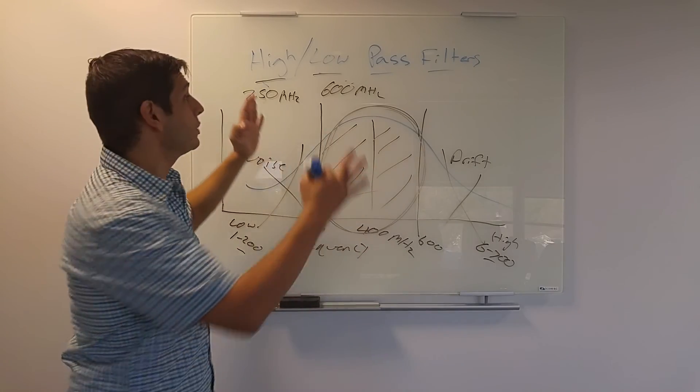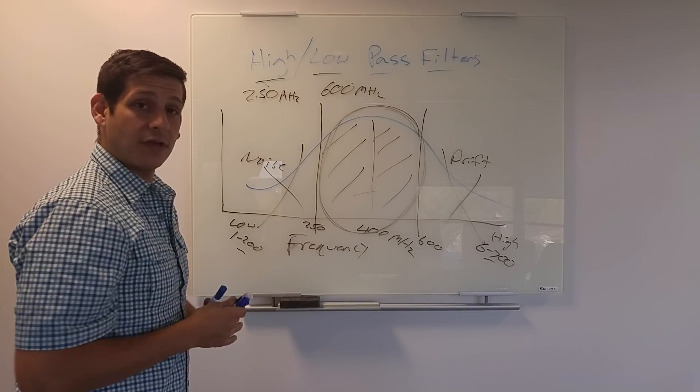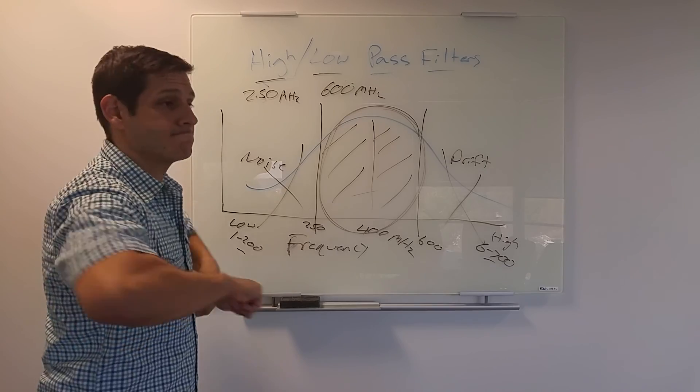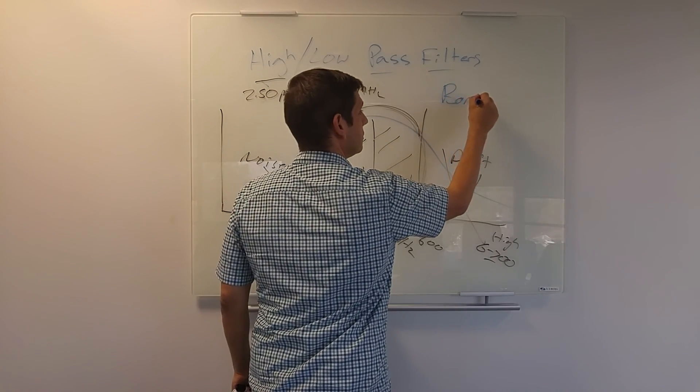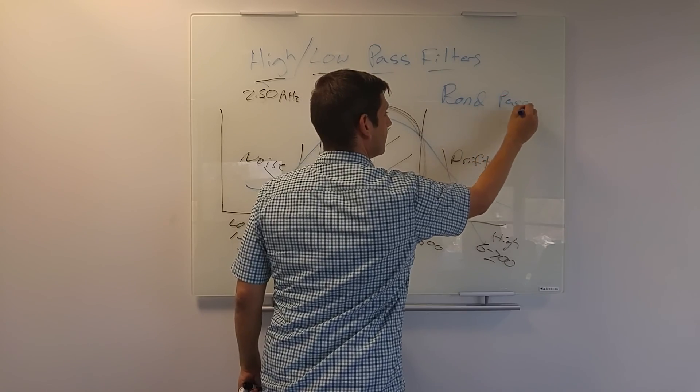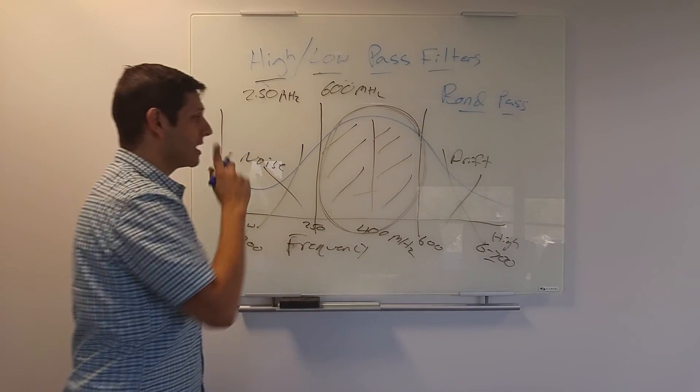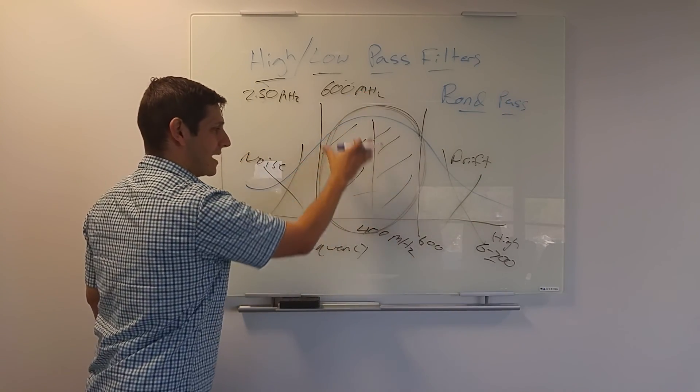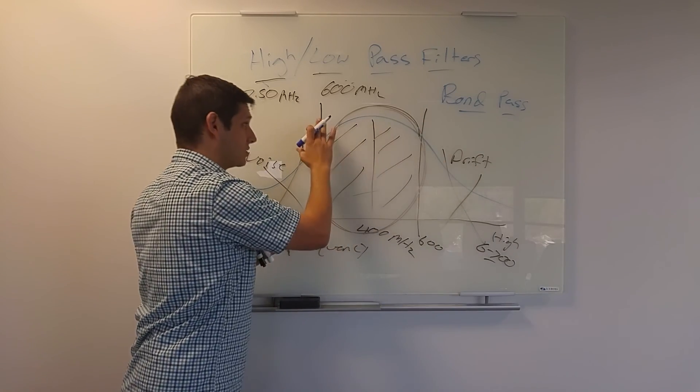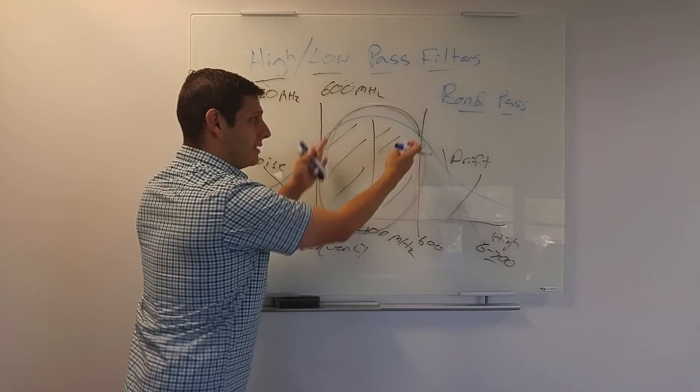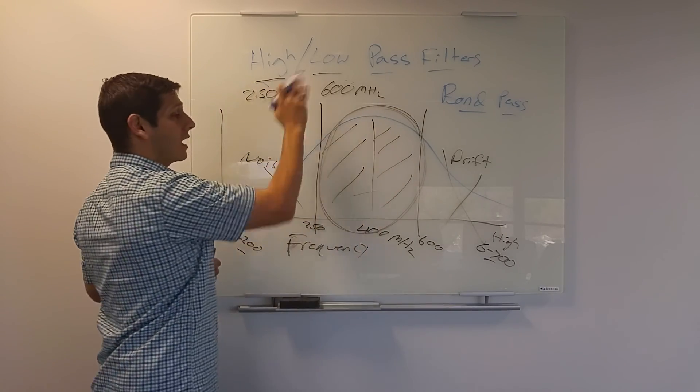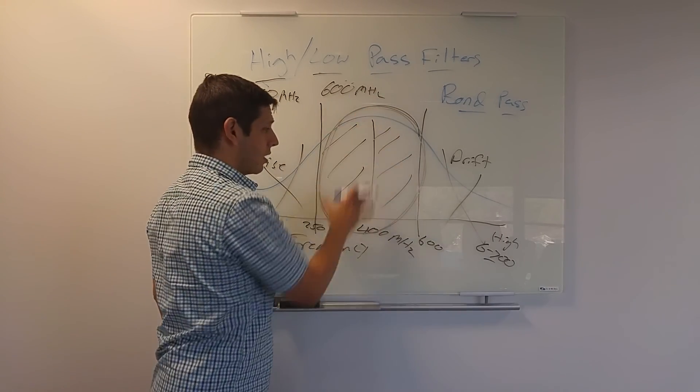And when you apply both together, it is often called a band pass. A band pass. Why? Because it's this band that passes. It's not higher than this number and lower than this number. It's between the two. So when you apply both the high and low filter, it's called often a band pass.